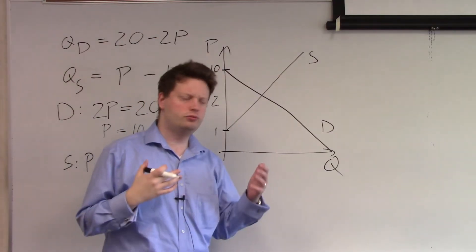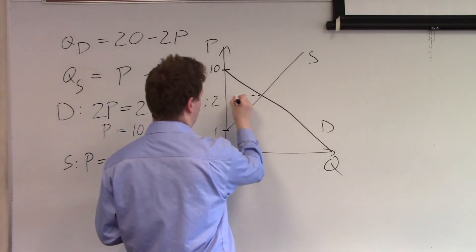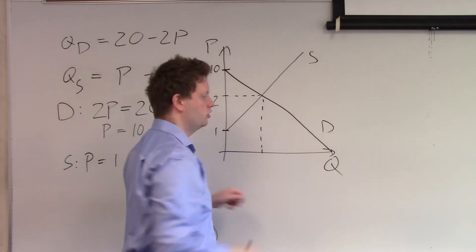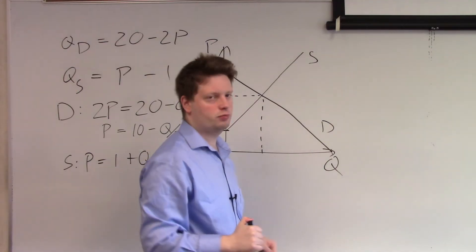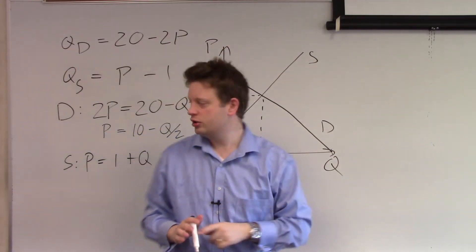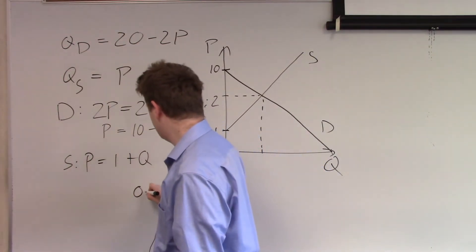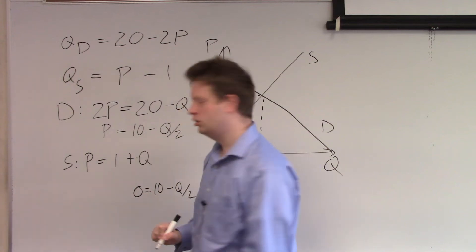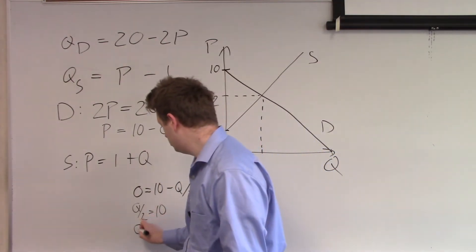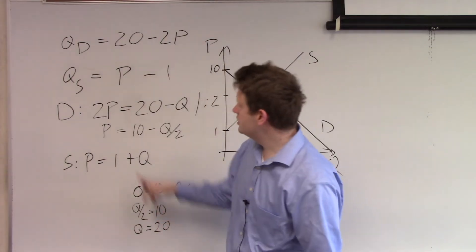Just having these two intercept points might not be enough for further analysis. We might also want to know where demand crosses the horizontal quantity axis. That point implies price is zero, so we set P equal to zero in the demand equation and get 0 equals 10 minus Q over 2, which gives Q over 2 equals 10, or Q equals 20.